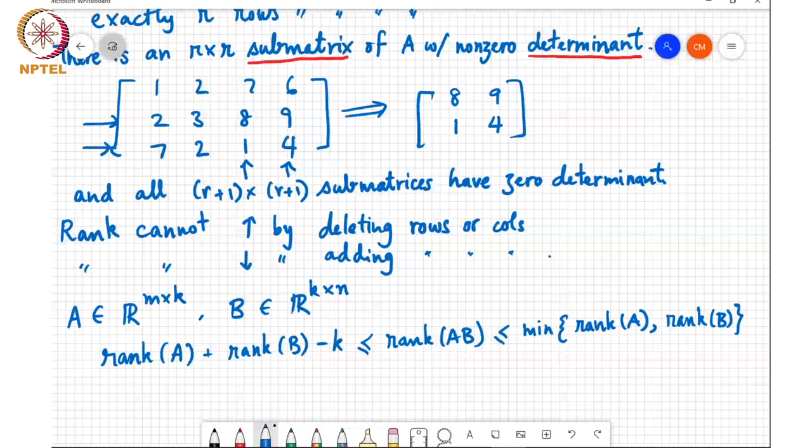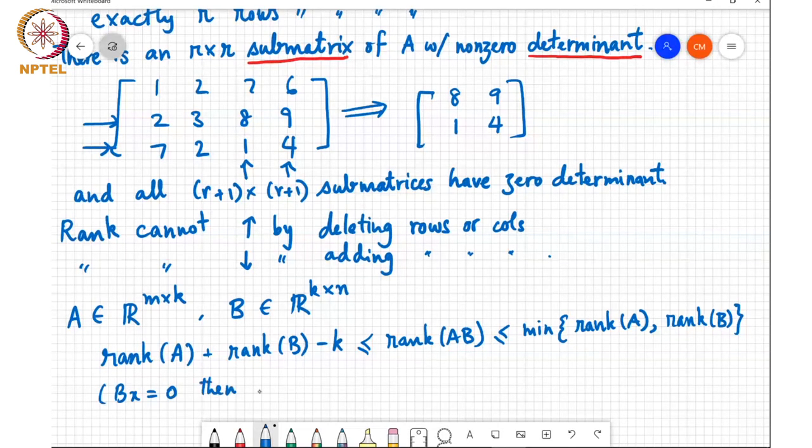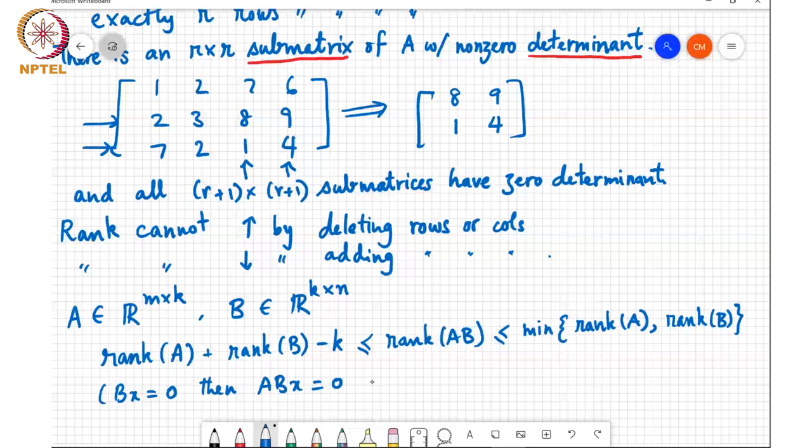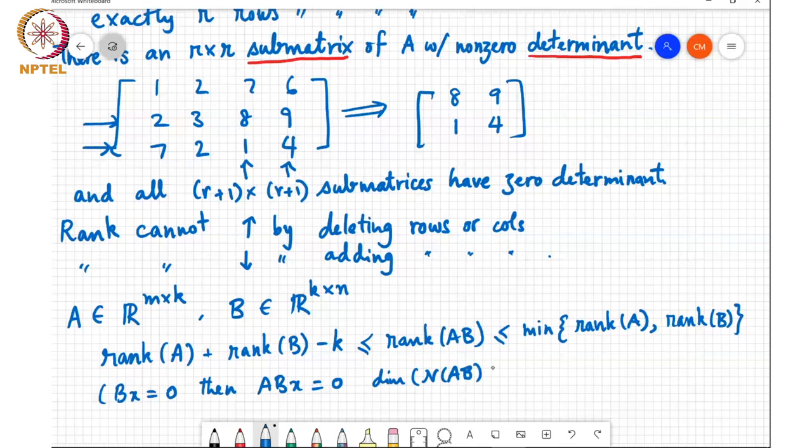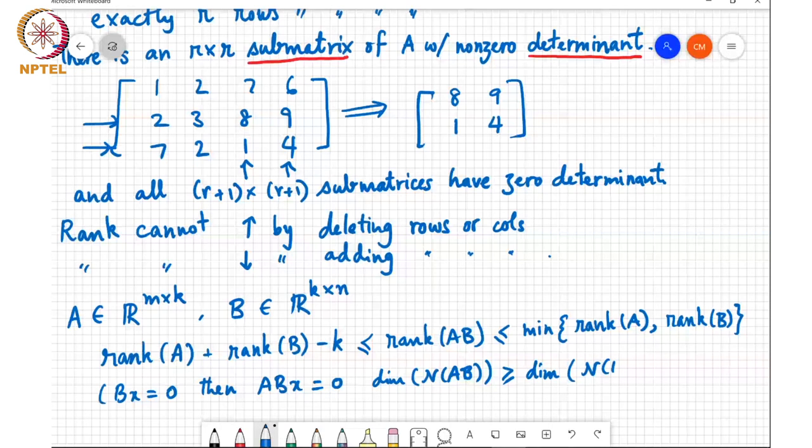So one other way to see this is that, for example, if Bx is equal to 0, then ABx is also obviously equal to 0, so that any vector which lies in the null space of B also lies in the null space of AB. And so we can say that the dimension of the null space of AB is at least equal to the dimension of the null space of B, which implies, remember now the rank nullity theorem, the dimension of the null space of AB and the rank of AB should add up to the value m or n. So that means that the rank of AB is less than or equal to rank of B.